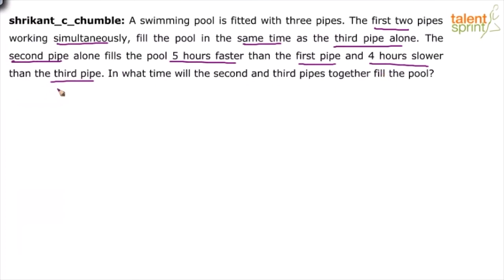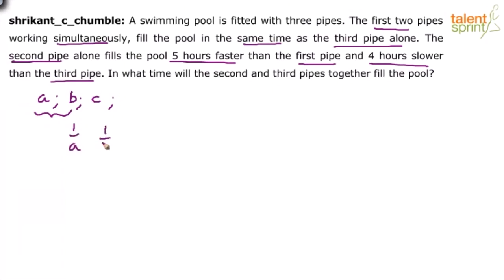Let's assume the three pipes are A, B, and C respectively. The first condition states the first two pipes working simultaneously equals the third pipe working alone. So the capacity of the first two pipes combined equals the third pipe: one by A plus one by B is equal to one by C.